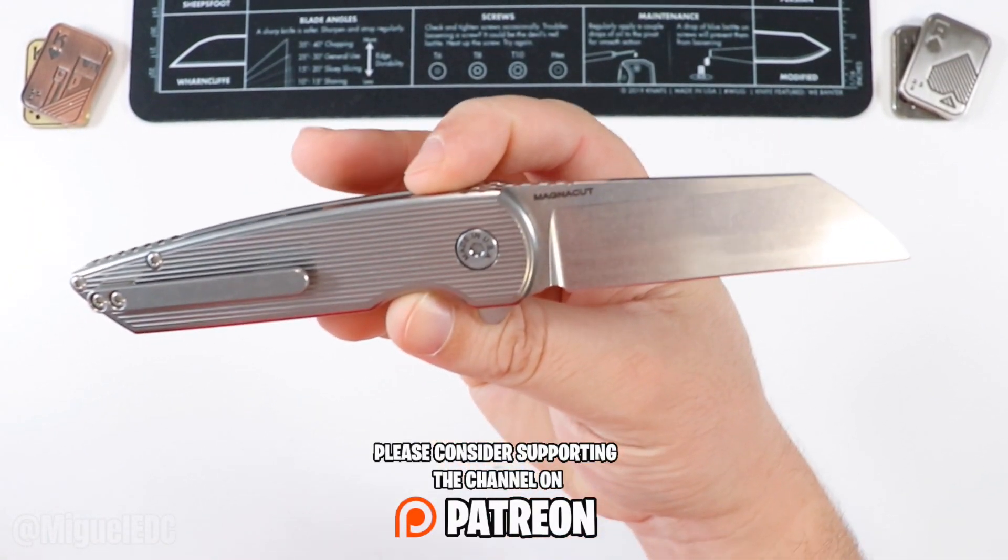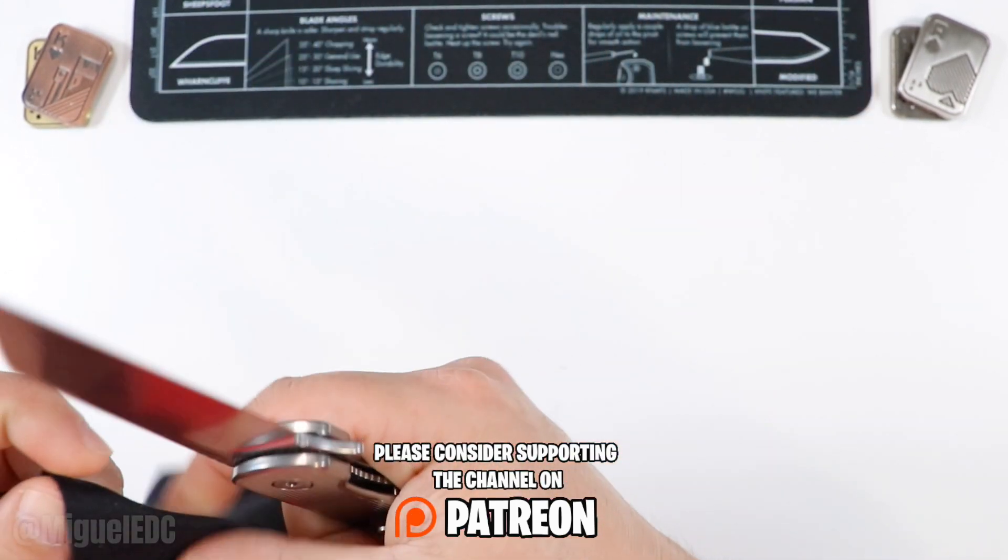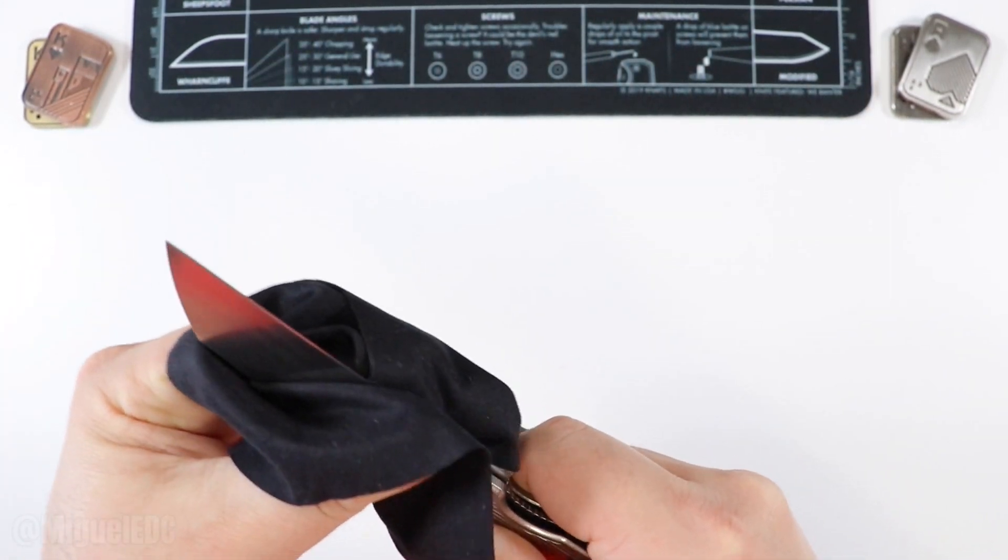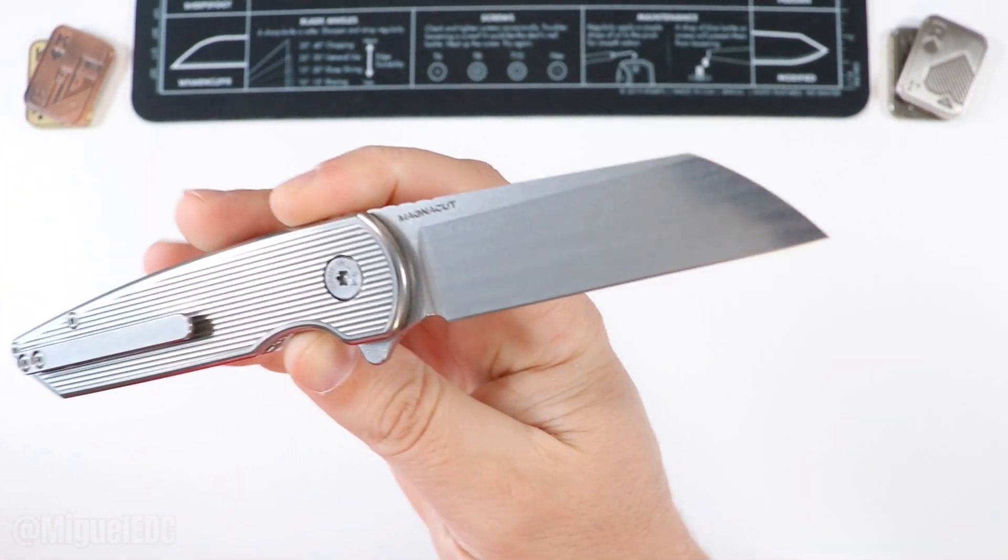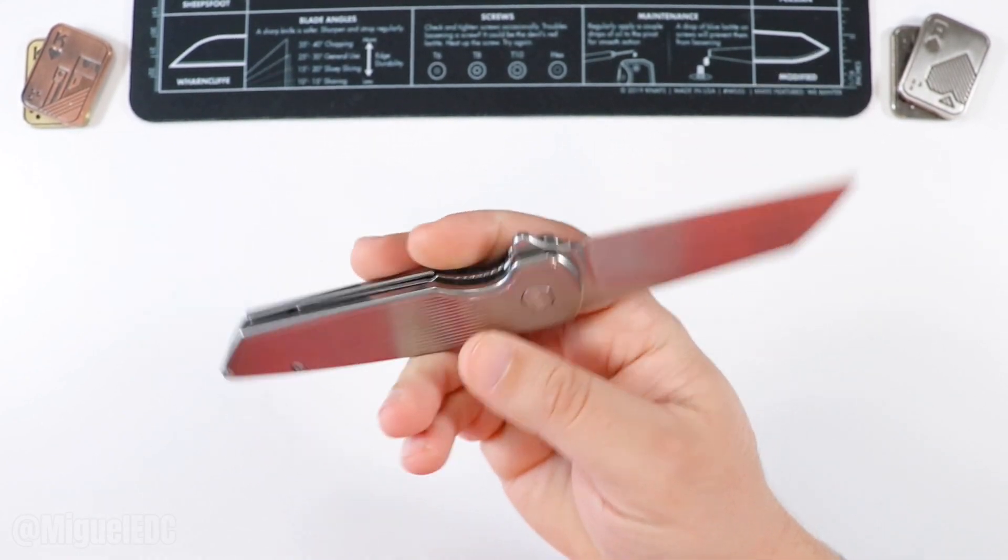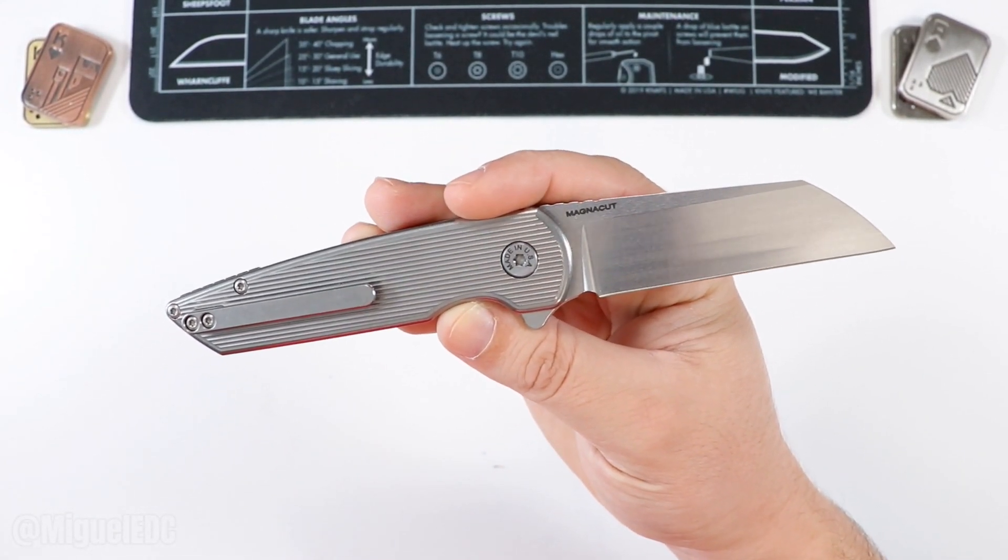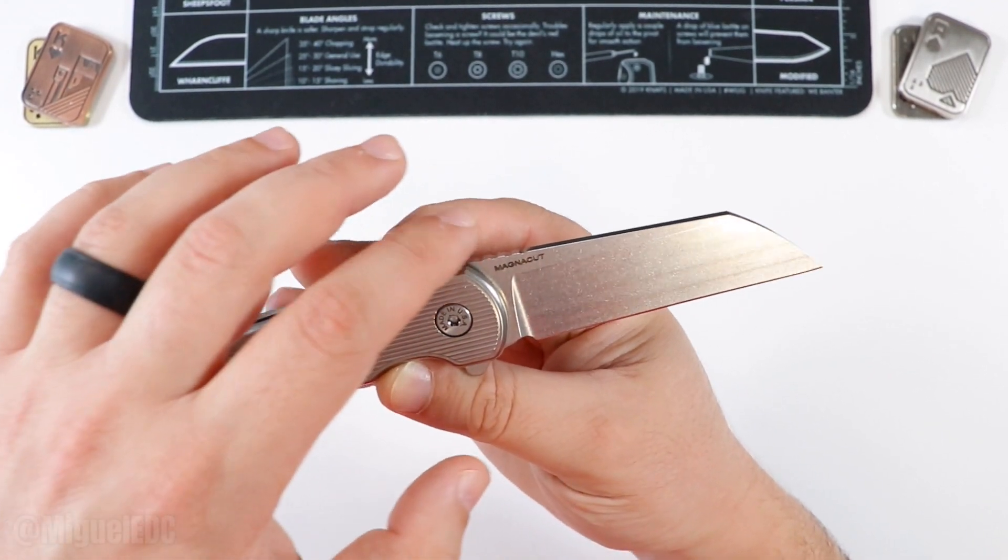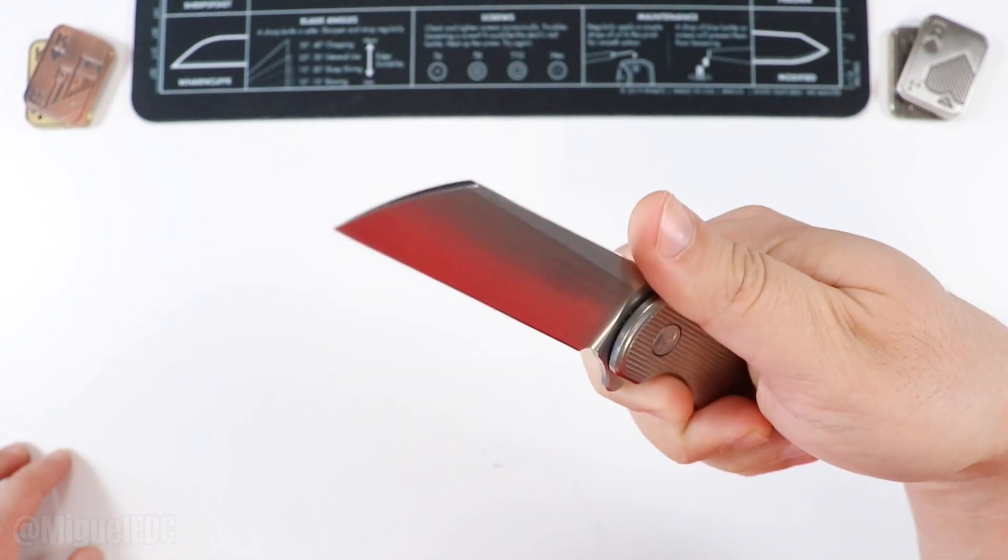Boom. Check this thing out. We have a Warncliffe sheepsfoot blade going on. Let's give it a nice little wipe, of course. Just get it nice and clean and beautiful for you guys to take it all in. Check this thing out. Holy smokes. Of course, we have Magnacut steel going on on this one, just like we did with the Model 1. And a flat grind. This certainly looks like a flat grind going on here.